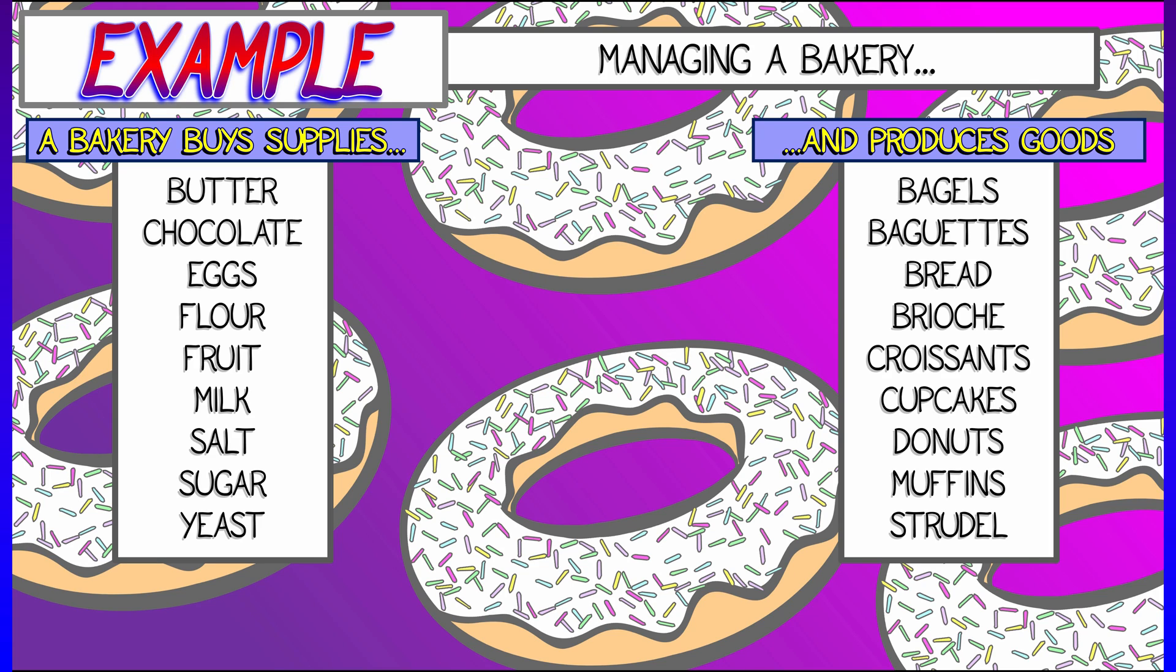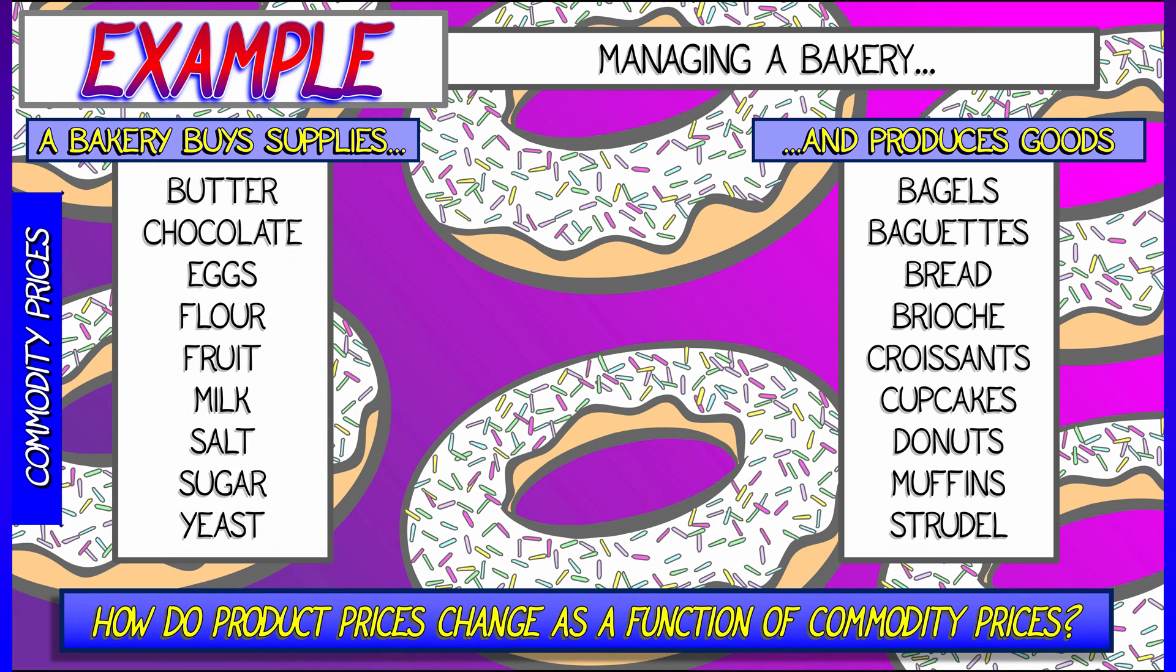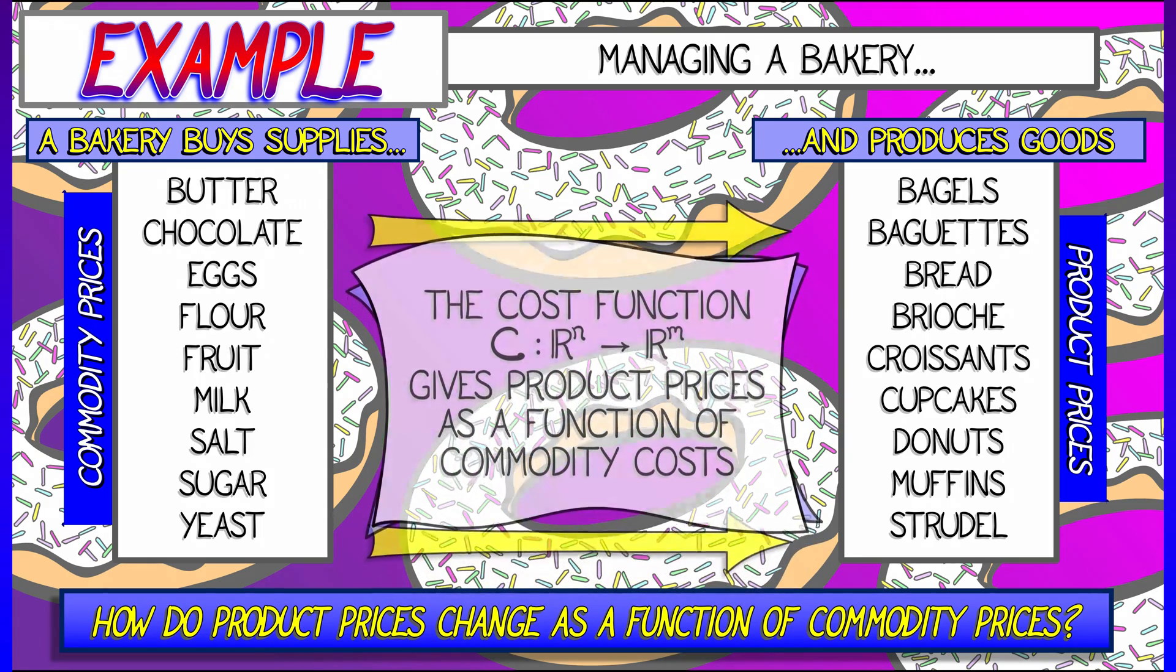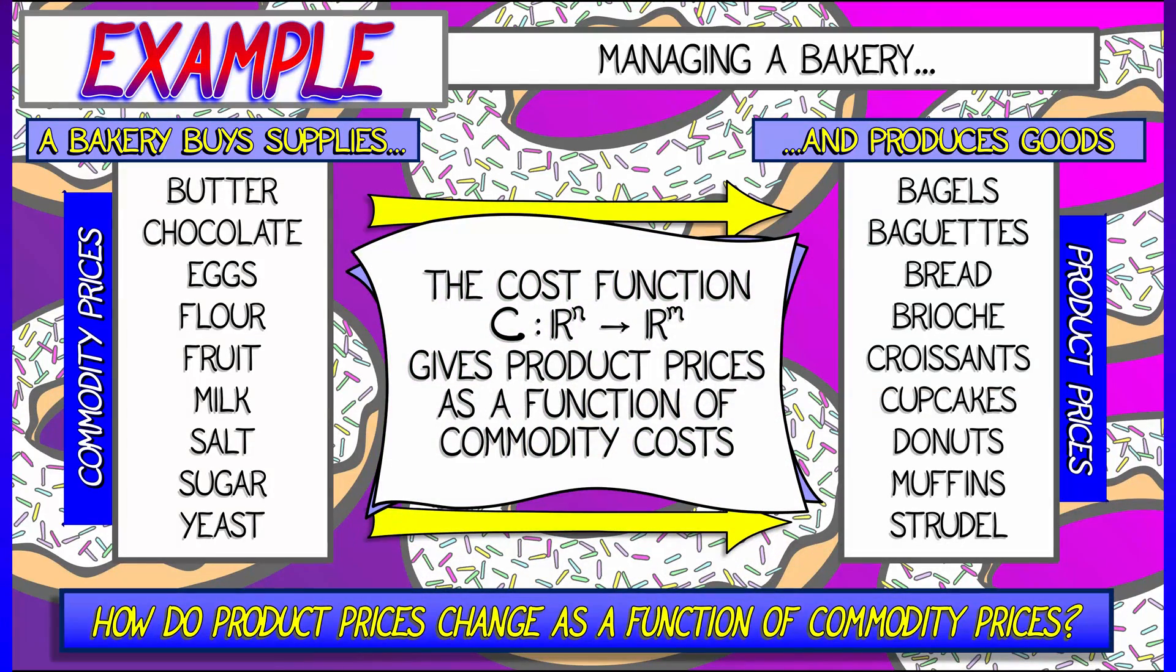Mmm, I'm getting kind of hungry here. Okay, what happens when the prices of the ingredients change? You have to update the prices of the products that you sell. How do those product prices change as a function of commodity prices? How do outputs change as a function of inputs?